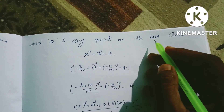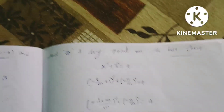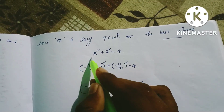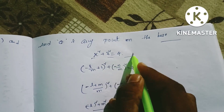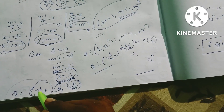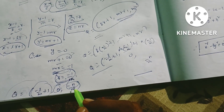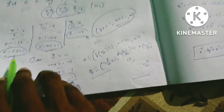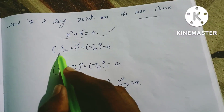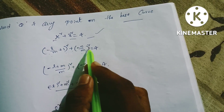Q is any point on the base curve. The guiding curve equation is x² + z² = 4. Substituting Q's coordinates: x is (-L/M + 1) and z is (-N/M). So (-L/M + 1)² + (-N/M)² = 4.